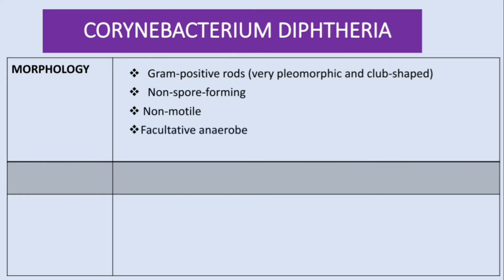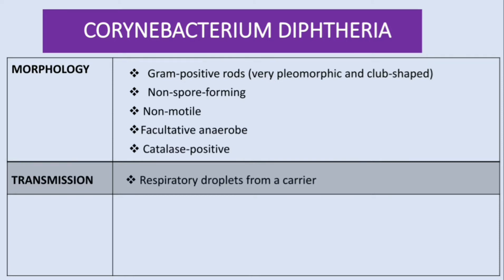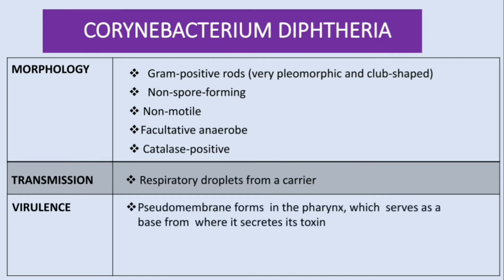It contains an enzyme called catalase, so it is catalase positive. On transmission, this bacteria is transmitted via respiratory droplets from a carrier. Talking about virulence, this bacteria has the ability to cause pseudomembrane formation in the pharynx, which serves as a base from where it secretes its toxin.